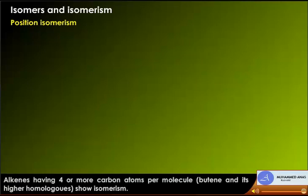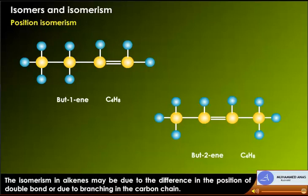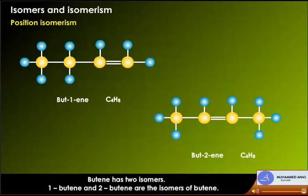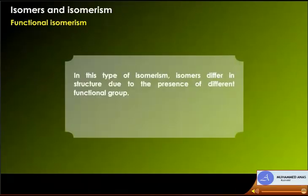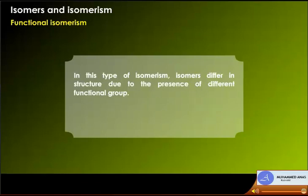Position isomerism: alkenes having four or more carbon atoms show isomerism due to the difference in position of the double bond or branching in the carbon chain. For example, isomers of butene C4H8: 1-butene and 2-butene are isomers of butene. Functional isomerism: isomers differ due to the presence of different functional groups. For example, with C3H6O, one can write either a ketone (acetone) or an aldehyde.